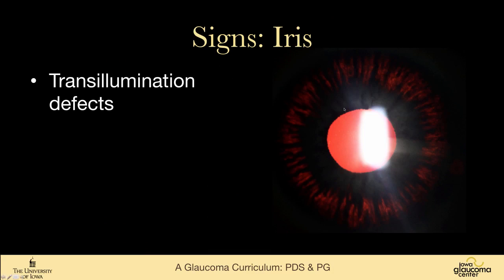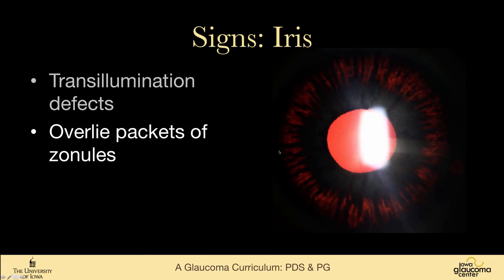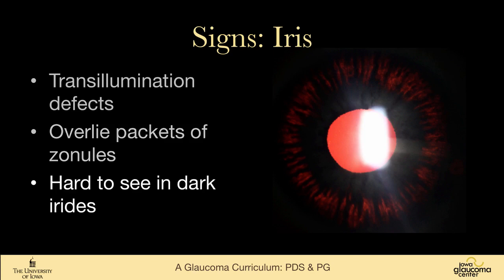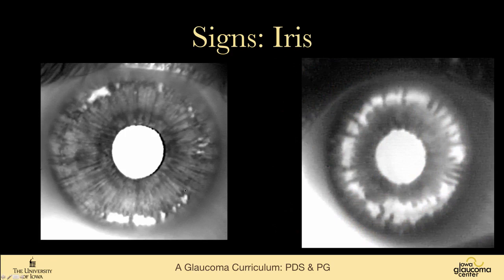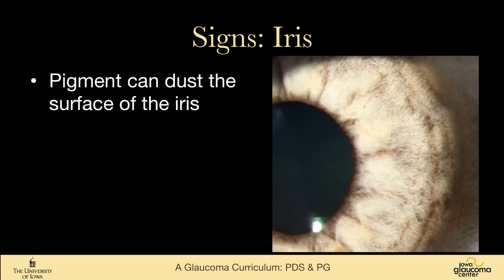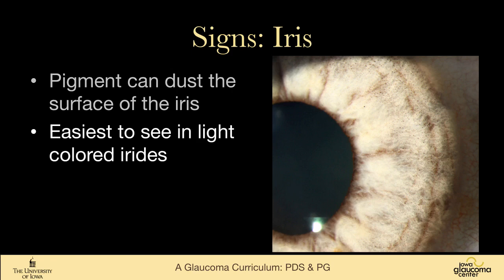Moving back in the iris, you can see translumination defects that overlie packets of zonules — you can imagine these radial zonules were the cause of these defects. These are hard to see; you can use a Finhoff to transluminate through the sclera, or shine light down through the pupil as the photographer did here. It's useful to be dark-adapted, as the findings are subtle. For people with very dark irides it can be almost impossible to see translumination defects, but we've done work with infrared video that shows them very nicely.